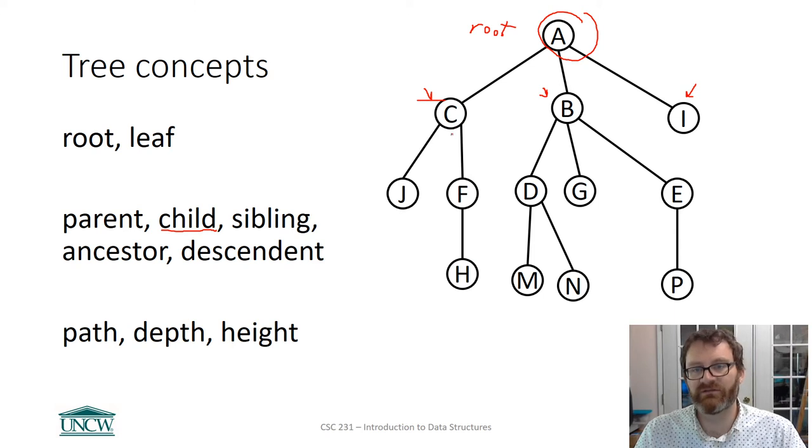So the children of A are its descendants. So C is a descendant, B is a descendant, and I is a descendant, or a child. Excuse me, I should use the word child. So C, B, and I are children of the root A. C also has children. Who are C's children? Well, that's J and F. B has three children, D, G, and E. Now, I'm not including grandchildren here when I talk about children.